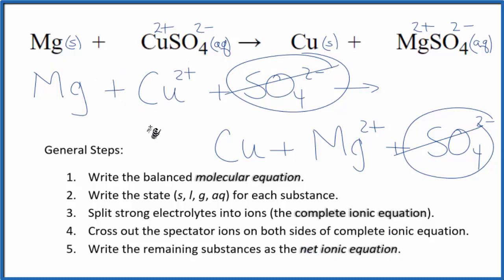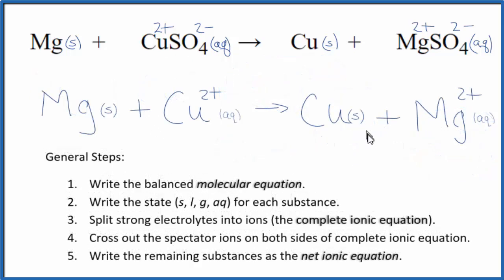I'll clean it up and write the states in. We'll have our net ionic equation. This is the balanced net ionic equation for magnesium plus copper 2 sulfate.